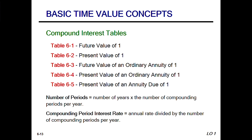We've got some tables at the end of your chapter. If you don't have a physical copy of the book, I'm not sure these are included in Wiley Plus, so I'm going to make a copy and post them online. The tables at the back are tables one through five, representing: future value of one, present value of one, future value of an ordinary annuity of one, present value of an ordinary annuity of one, and present value of an annuity due of one.